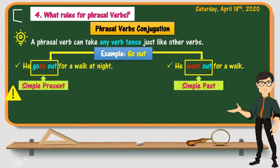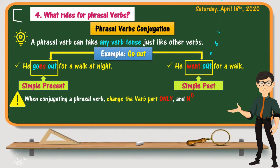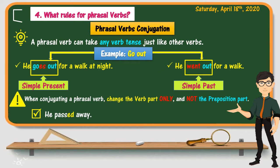So please remember: when conjugating a phrasal verb, change the verb part only and do not change the particle. For example, to put the verb pass away in the simple past, we add -ed to the verb — he passed away. We never say he passed awayed — this is not correct.